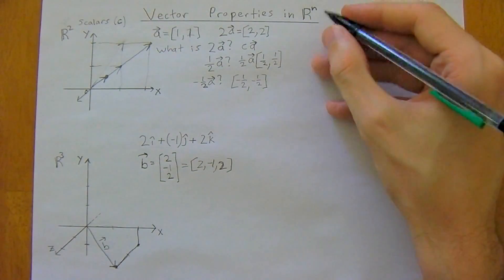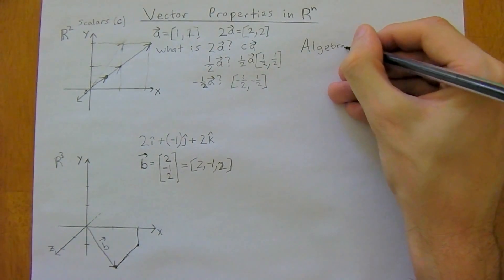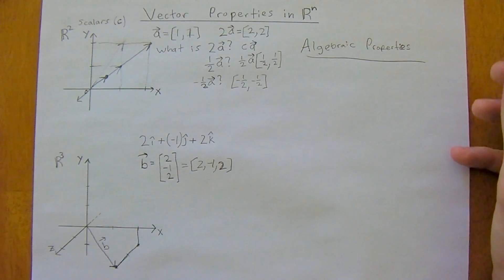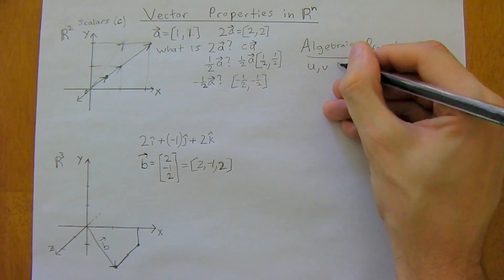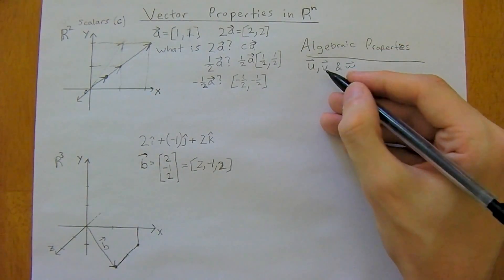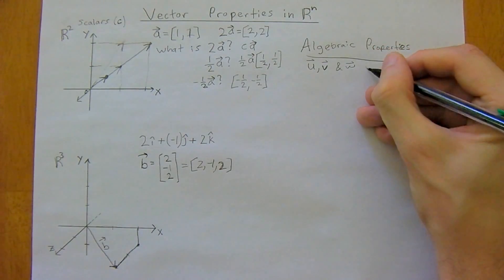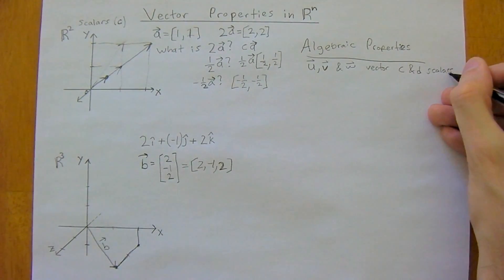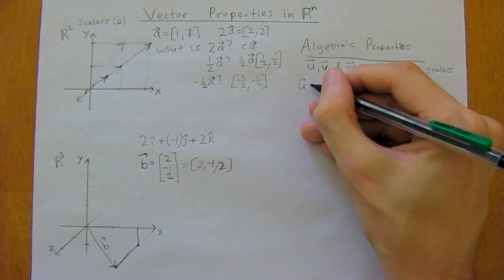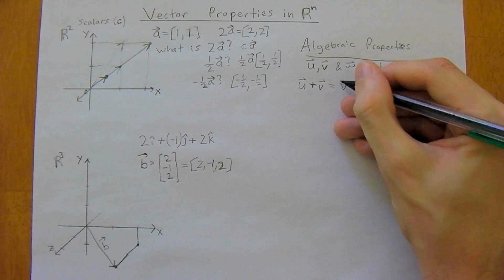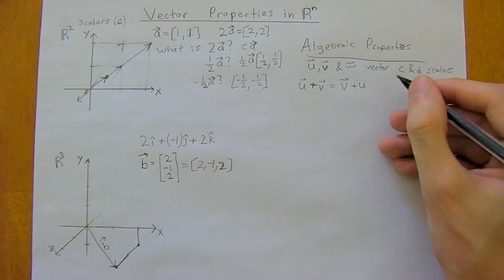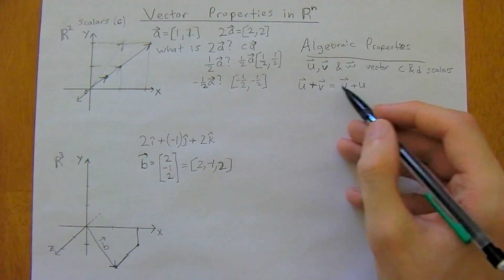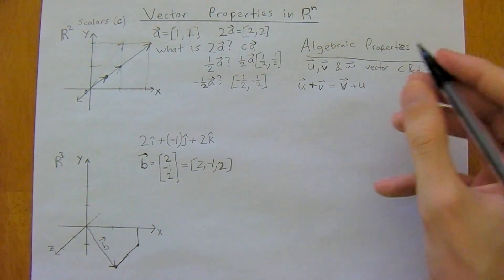So now I want to get into some algebraic properties, this is the very important part. So u and v and w, and we denote vectors, lowercase letters with the arrow atop, are going to be vectors, and c and d will be scalars. So the first property is u plus v is the same as v plus u, so it's commutative, and just means you can reverse the direction, it's good either way, they both are the exact same thing, and so that's 1.